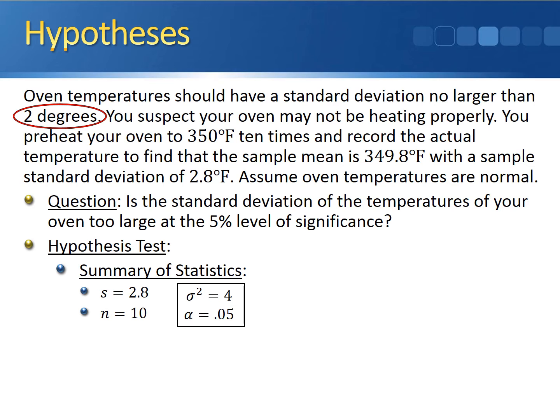Since everything should be in terms of the population variance, that also means that our null hypothesis is going to be σ² = 4. Since we're looking to see if the standard deviation of the oven temperature is too large, we want to test in the alternative if the population variance is greater than 4.